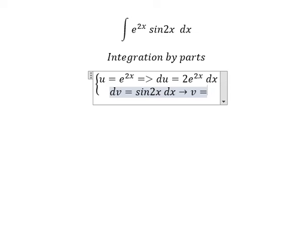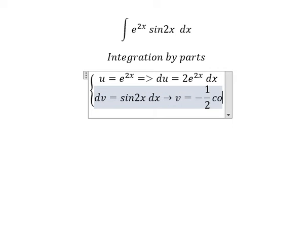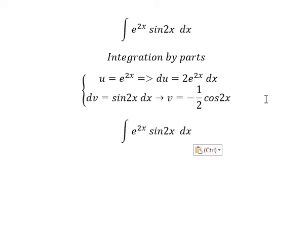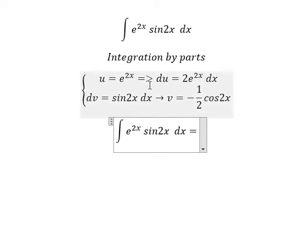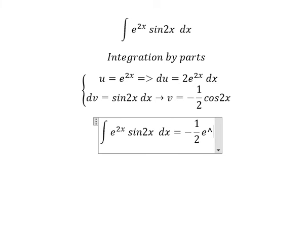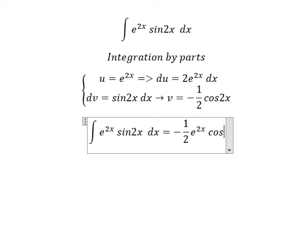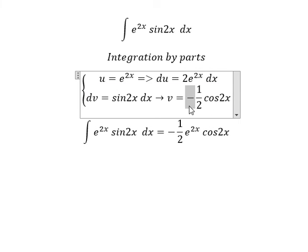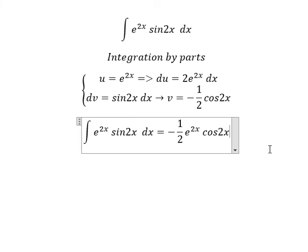So we have u multiplied by v, so we have negative 1 over 2 e to the power of 2x cos 2x minus the integral. We have number 2 multiplied by 1 over 2, they will cancel, but we have negative and we have another negative in here, so we have positive.